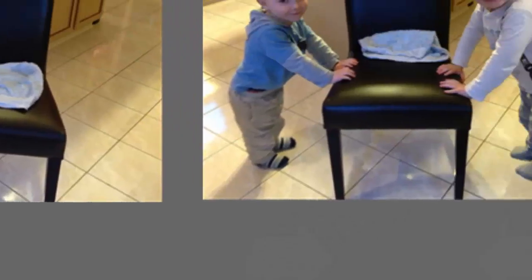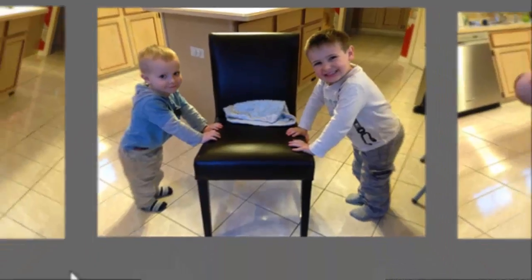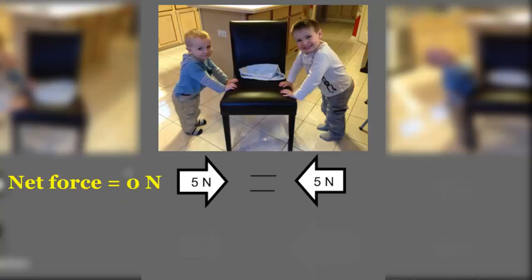In the second scenario, we have both boys pushing on opposite sides of the chair. The first situation is if both boys are pushing with the exact same magnitude — five newtons on one side and five newtons on the other side. You would have equal forces canceling each other out. This is called balanced forces, and you're going to get a net force of zero. Five minus five is zero, so the net force will be zero newtons and therefore the object will not move.